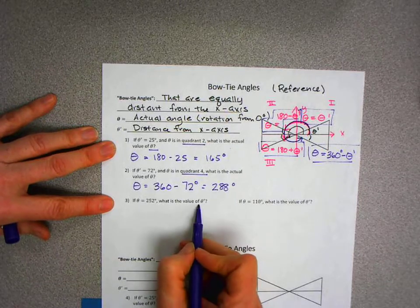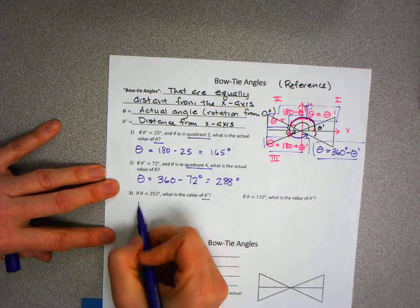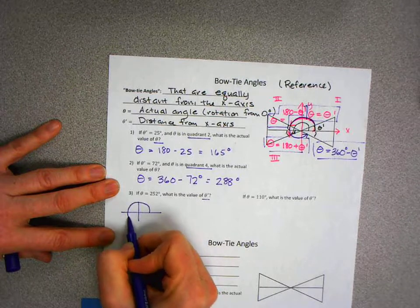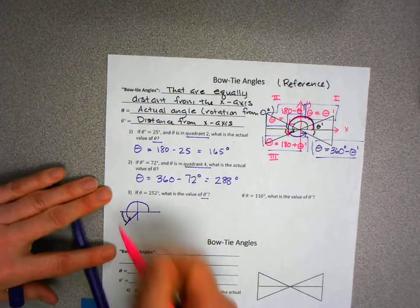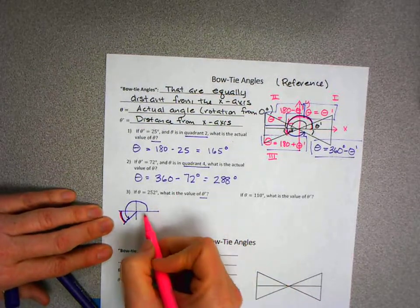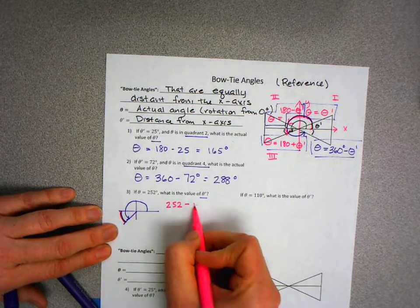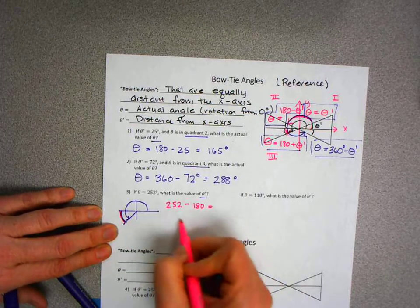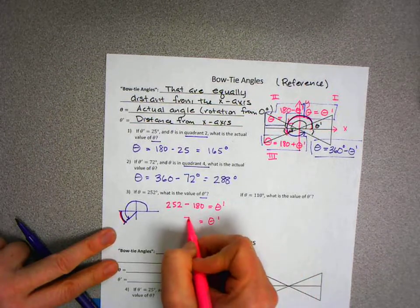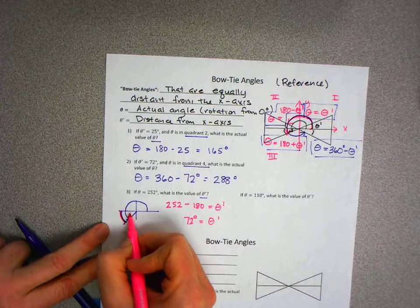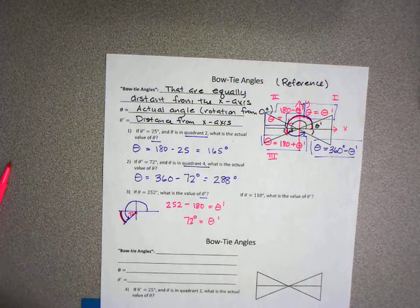Now let's go the opposite way — what if we know theta and want to find theta prime? If theta equals 252, it's in the third quadrant since it's greater than 180 but less than 270. To find theta prime, I take the total angle 252 minus 180, which gives theta prime equals 72 degrees. So 180 plus 72 equals 252 — that checks out.